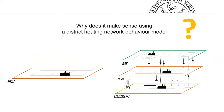Why does it make sense to use a district heating network model? It allows us to understand the effects of modifications on a thermal network — which benefits can be achieved by modifying the network. This can be done in two main ways: first, studying the thermal network as a standalone system, and second, considering the thermal network included in a multi-energy framework — also considering gas and electricity networks — in a more complex context.